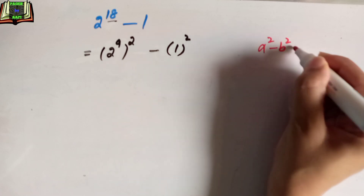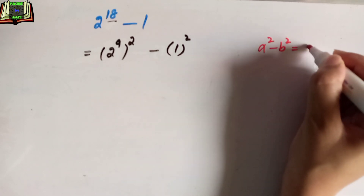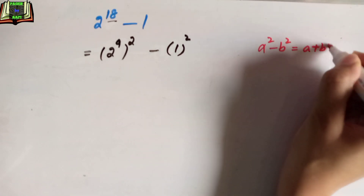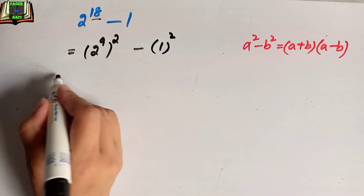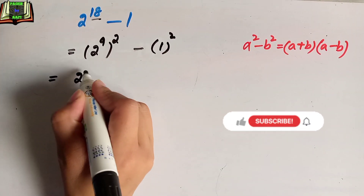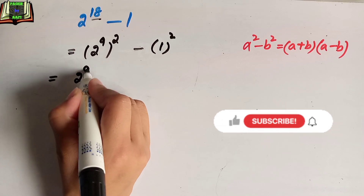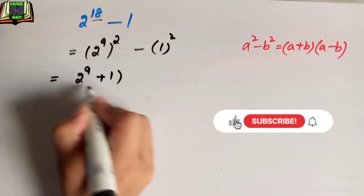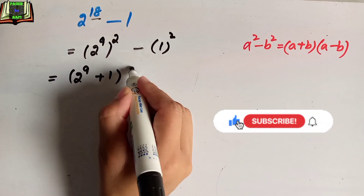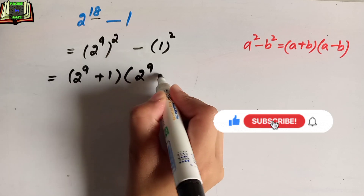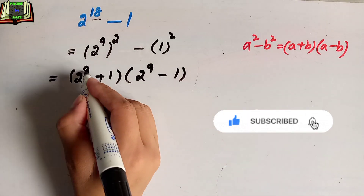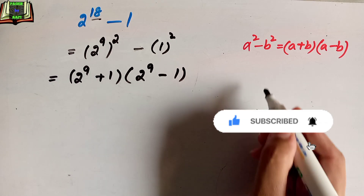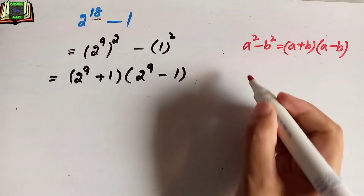Now we are going to use the third binomial formula: a squared minus b squared equals (a + b)(a − b). Applying this formula, the expression becomes (2 to the power 9 + 1) into (2 to the power 9 − 1).